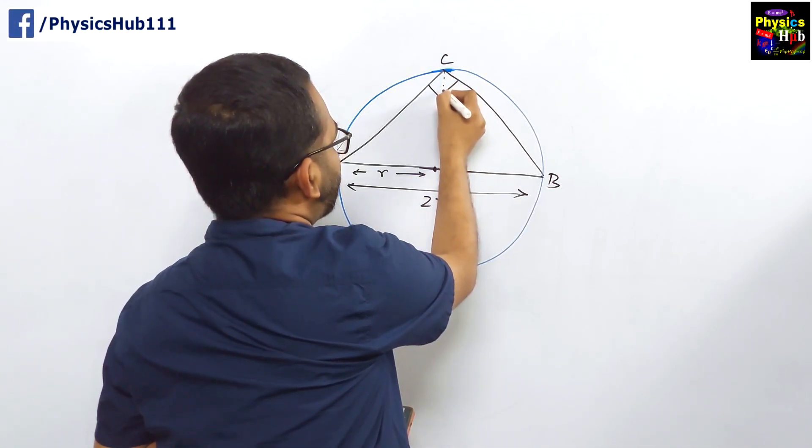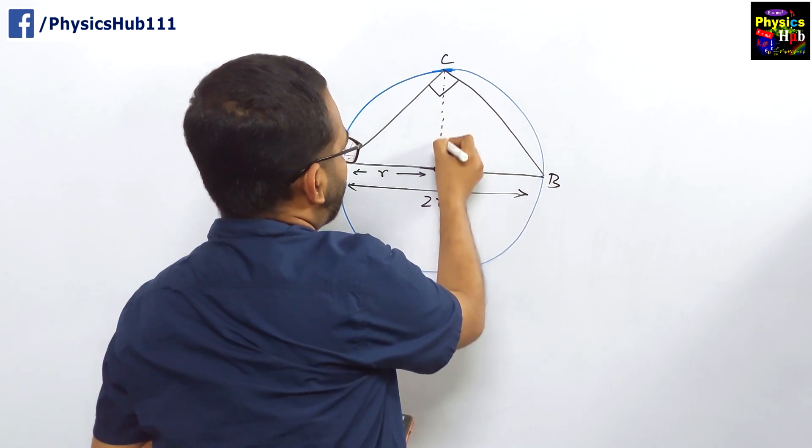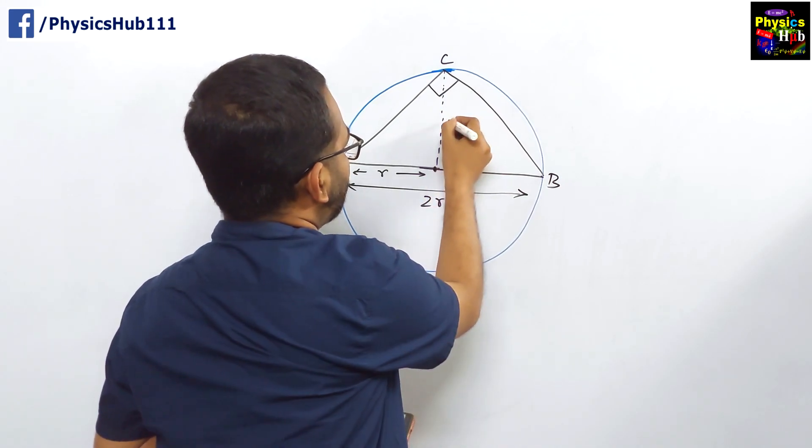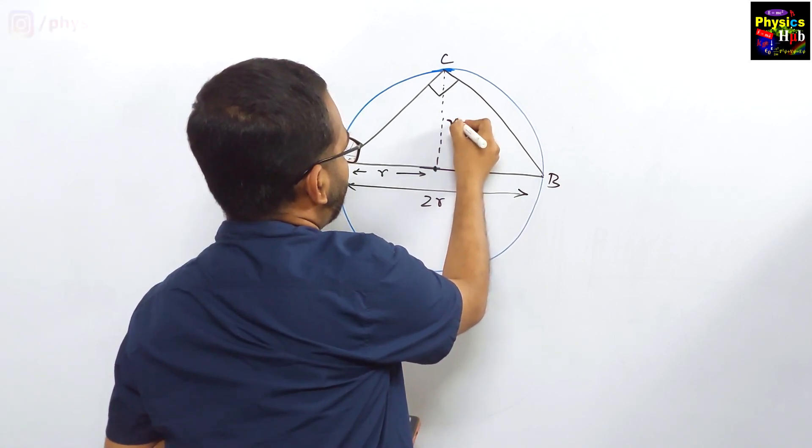Now what will be the height of this triangle? Because this is also radius, so this will be r.